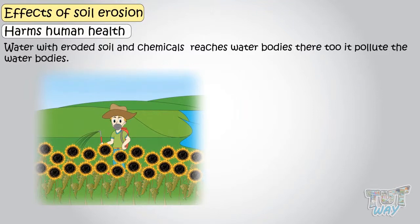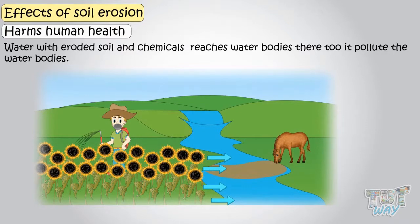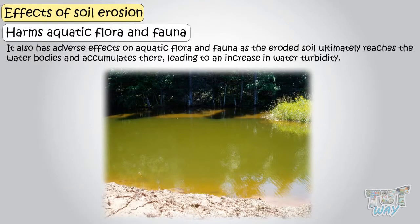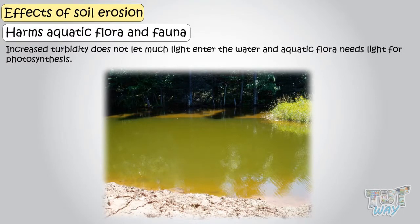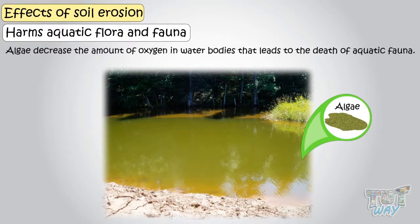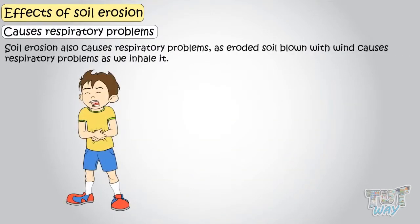Water carrying eroded soil and chemicals reaches water bodies and pollutes them, having adverse effects on aquatic flora and fauna. The eroded soil accumulates in water bodies, leading to increased water turbidity. Increased turbidity does not let much light enter the water, and aquatic flora needs light for photosynthesis. Soil reaching water bodies is also rich in nutrients such as phosphorus and nitrogen, leading to excessive algae growth. Algae decreases the amount of oxygen in the water body, leading to the death of aquatic fauna. Soil erosion also causes respiratory problems.